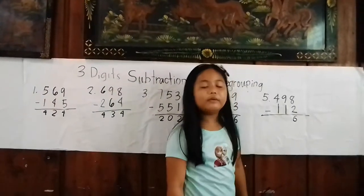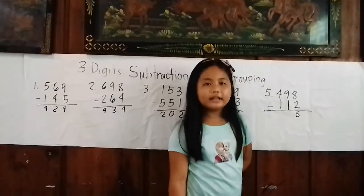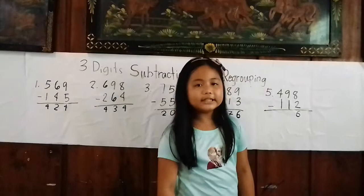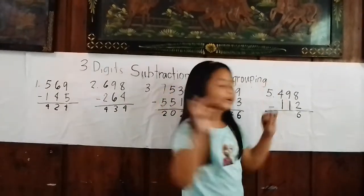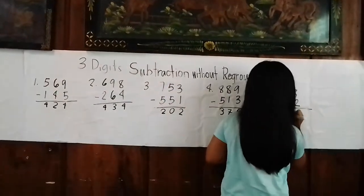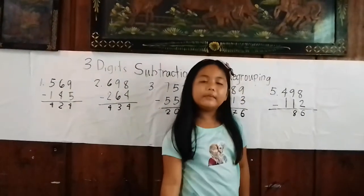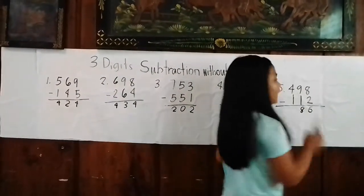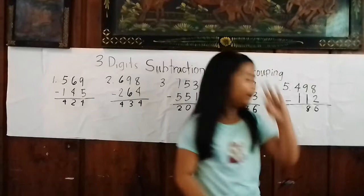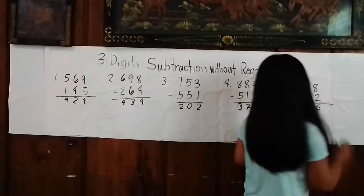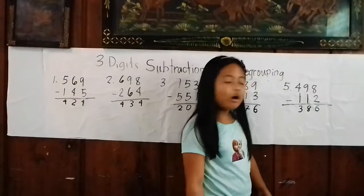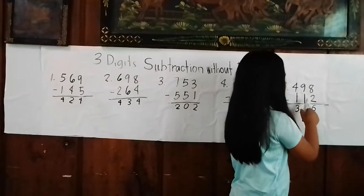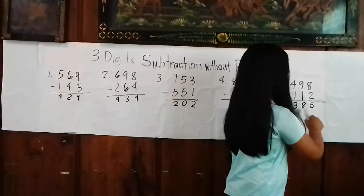Now we will subtract the tens place. 9 minus 1 equals 8. Now we will subtract the hundreds. 4 minus 1 equals 3. So the answer of 498 minus 112 equals 386.